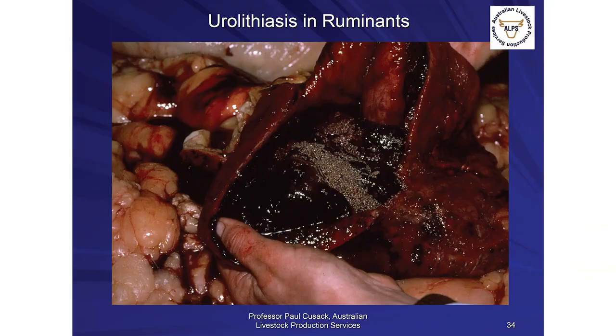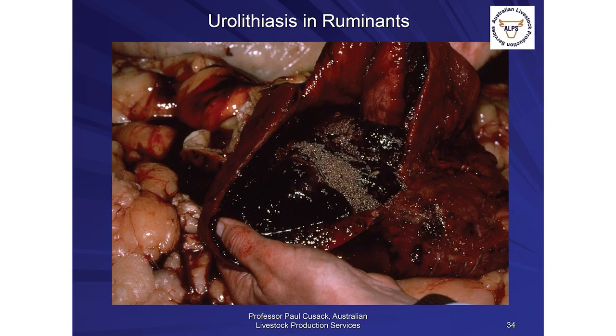This is the bladder of a bovine that succumbed to urolithiasis — you can see grains of sand in the bladder, in this case struvite which is a magnesium ammonium phosphate crystal. We often get stones of mixed composition — combinations of struvite with calcium oxalate and calcium carbonate. We can reduce the size of struvite and calcium carbonate stones by acidifying the urine with ammonium chloride at up to 1% in feed, but we can't decrease calcium oxalate stones with acidification. Adding salt is the first step to get stock to drink more.